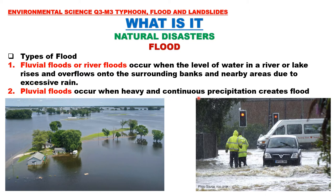Another type is also called pluvial flood — it occurs when heavy and continuous precipitation happens without an overflowing river or lake nearby. The first type, fluvial, is due to the overflowing of rivers or lakes; the second type, pluvial, is due to heavy and continuous precipitation or rain.